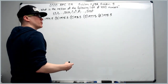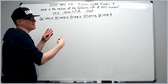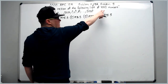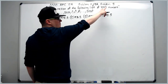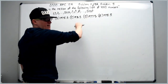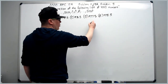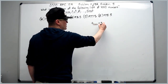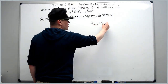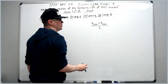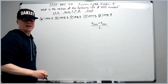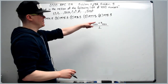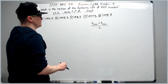So how do we approach this? Think of it like a big sequence. If we want the median of the first 4040, we're going to want the 2020th plus the 2021st term divided by 2, because that will be right in the middle of the two middle terms.